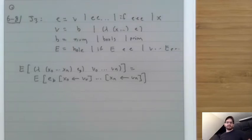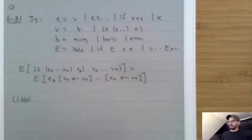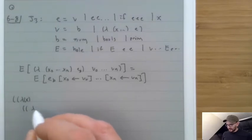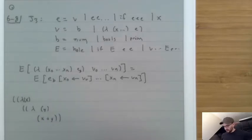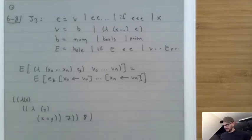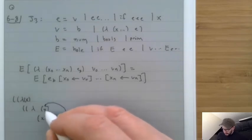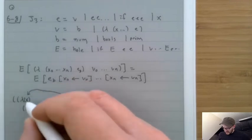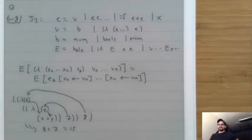Example: ((lambda X . (lambda Y . X + Y)) 8) applied to 7. The 7 goes into Y and the 8 goes into X, so the whole thing equals 8 + 7 = 15.